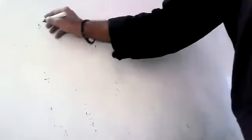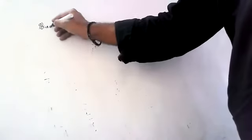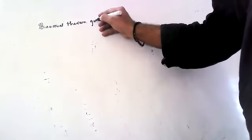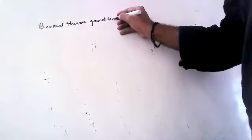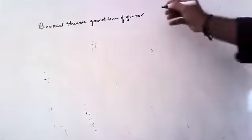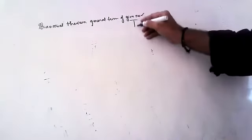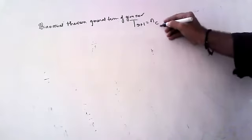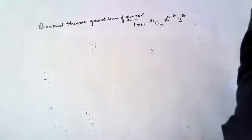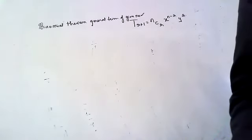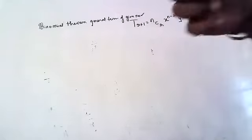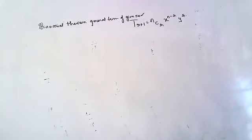Children, in Binomial Theorem today we will find out the general term of a given number. Yesterday we discussed the general term formula: T(r+1) = nCr · x^(n-r) · y^r. Using this formula, children, how to find a respective given term — one question I will show you. Please listen carefully, children.